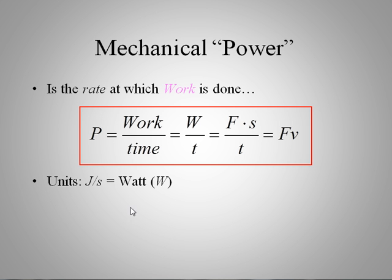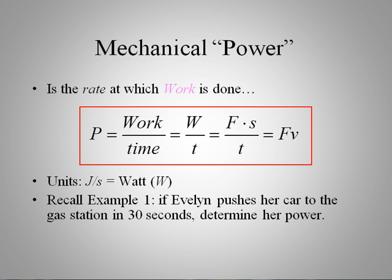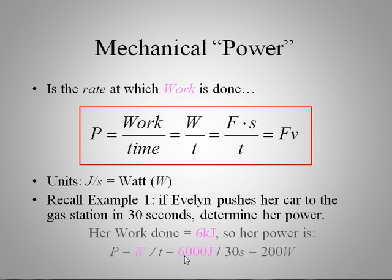The units here, if you have a joule per second, that's given a special name, it's a watt, after James Watt of the steam engine fame. Let's do an example here quickly. Remember Evelyn pushing her car. If she pushes her car to the gas station in 30 seconds, what's her power? If you want to pause your video and try and work that out. Her power is, we remember she did 6,000 joules of work. Power is that divided by the time. We have to change this to joules here if we want the result to be in watts. If we divide those two, we get 200 watts.